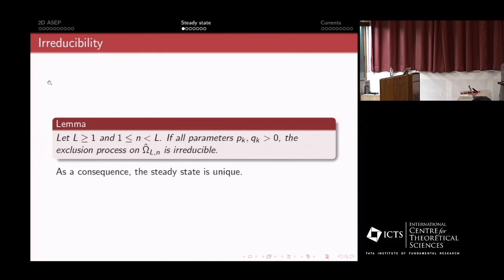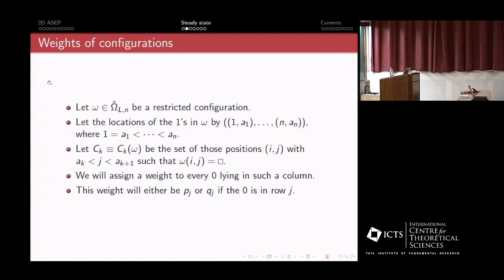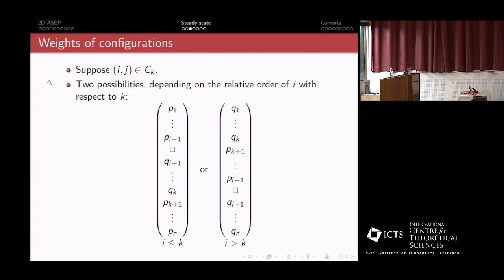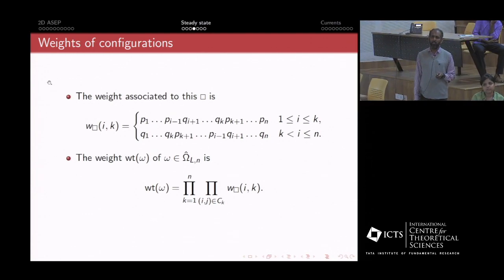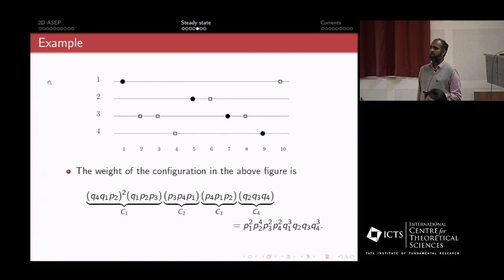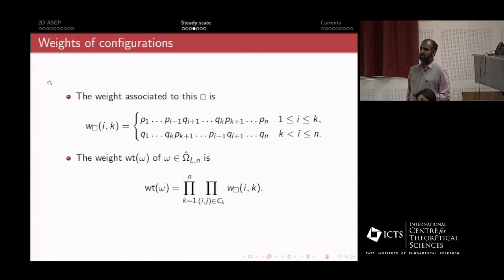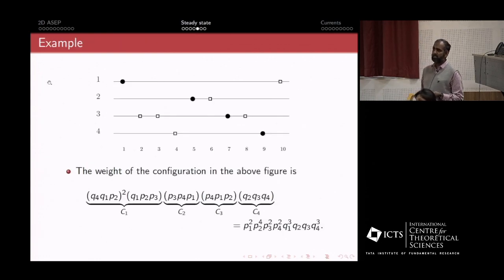Since I don't have much time, I will not go through all the details. One can show that this process is irreducible—it's not obvious at all, but one can go from any configuration to any other configuration, and therefore the stationary distribution is unique. The slides are online so you can look at the details if you're interested. There is a weight associated to every column. For a given configuration, there's a certain weight associated to the column, and the weight of the configuration is the product of the column weights. The stationary distribution is precisely this. So that's our main theorem for the stationary distribution. This is completely disordered; we do not specify any values of the pis and the qjs.